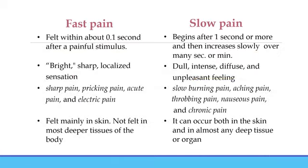Apart from these, we also have fast pain and slow pain. Fast pain is felt within 0.1 second after a painful stimulus, and slow pain begins after 1 second or more and increases slowly over many seconds or minutes. Fast pain is a bright, sharp, localized sensation; slow pain is dull, intense, diffuse, and unpleasant. Fast pain is described as sharp, pricking, acute, or electric pain, while slow pain is described as burning, aching, throbbing, nauseous, or chronic in nature. Fast pain is felt mainly in skin; slow pain can occur in both skin and deeper tissues or organs.